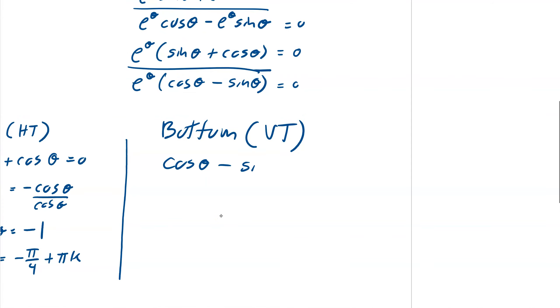So cos θ minus sin θ equals 0. We do the same thing as before. So I'm going to make this equal to sin θ equals cos θ. You just add one to the other. And then divide by cos θ. And we end up with tan θ equals 1. So same basic idea. Now θ would be π/4. And tangent's period is πk.